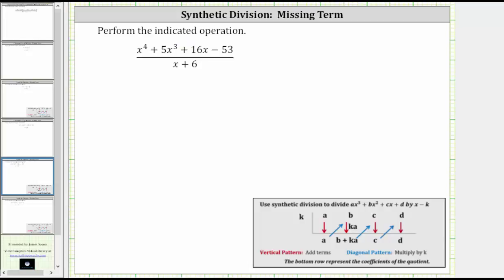So let's rewrite the dividend or the numerator as one x to the fourth plus five x cubed plus zero x squared plus 16x minus 53.